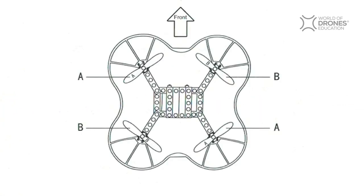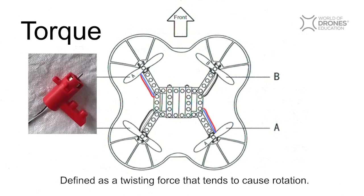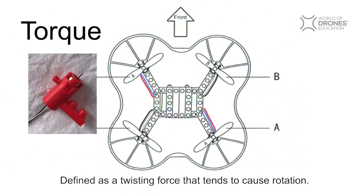In any quadcopter design, the motors are always going to be arranged diagonally like this, and that's to combat what we call torque. If you've ever turned on a motor without it being properly fixed down, you know exactly what I mean.